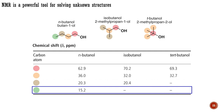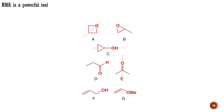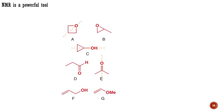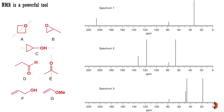A common situation chemists find themselves in is that they have some idea about a molecular formula from high-resolution mass spectrometry and need to match a structure to NMR data. Here is an example: the formula C3H6O is represented by seven reasonable structures. The three carbon NMR spectra shown represent three of these compounds, and the challenge is to identify which three. Simple symmetry can distinguish structures A, C, and E from the rest as these three have only two types of carbon atom. The two carbonyl compounds D and E will have one peak in the 150–200 ppm region, but compound E has two different saturated carbon atoms while compound D has only one.